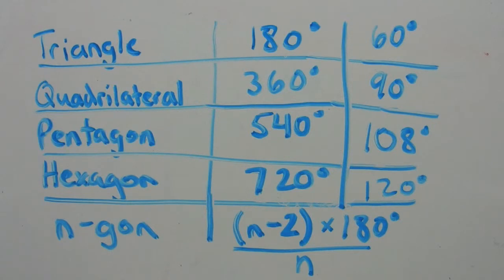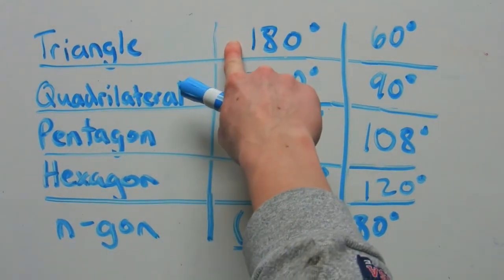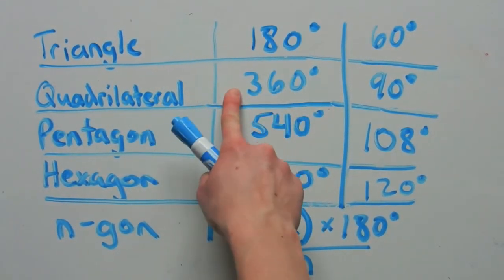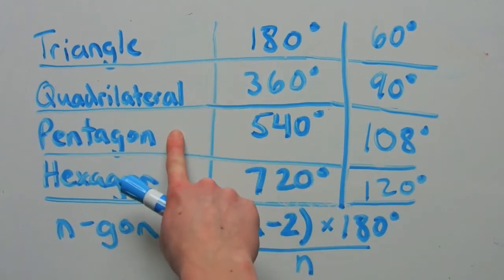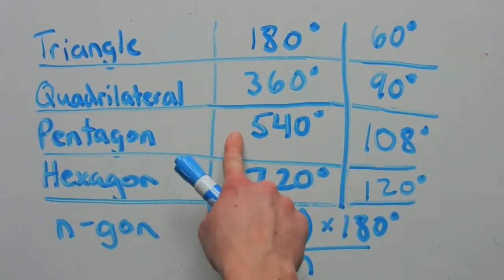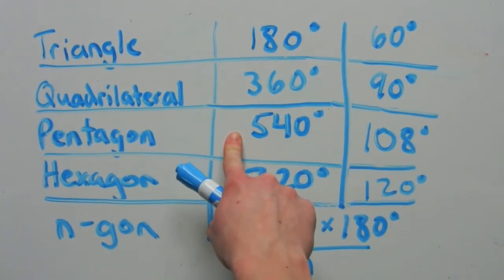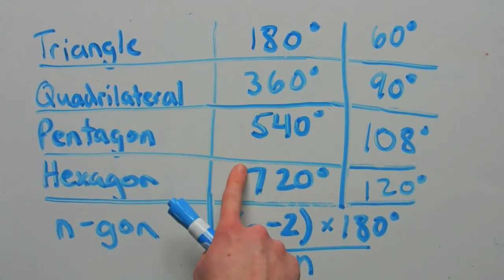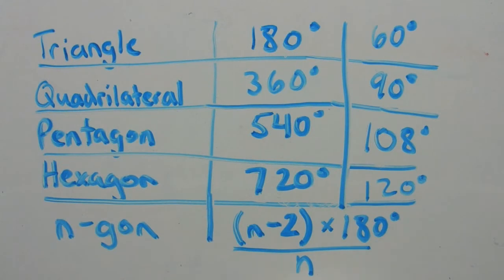However, regular or irregular, each polygon that has three sides will add up to be 180. Each polygon that has four sides, 360. Each five sided polygon will add up to be 540 degrees. Each hexagon will add up to be 720 degrees. And so on. Regardless of whether it is regular or irregular.